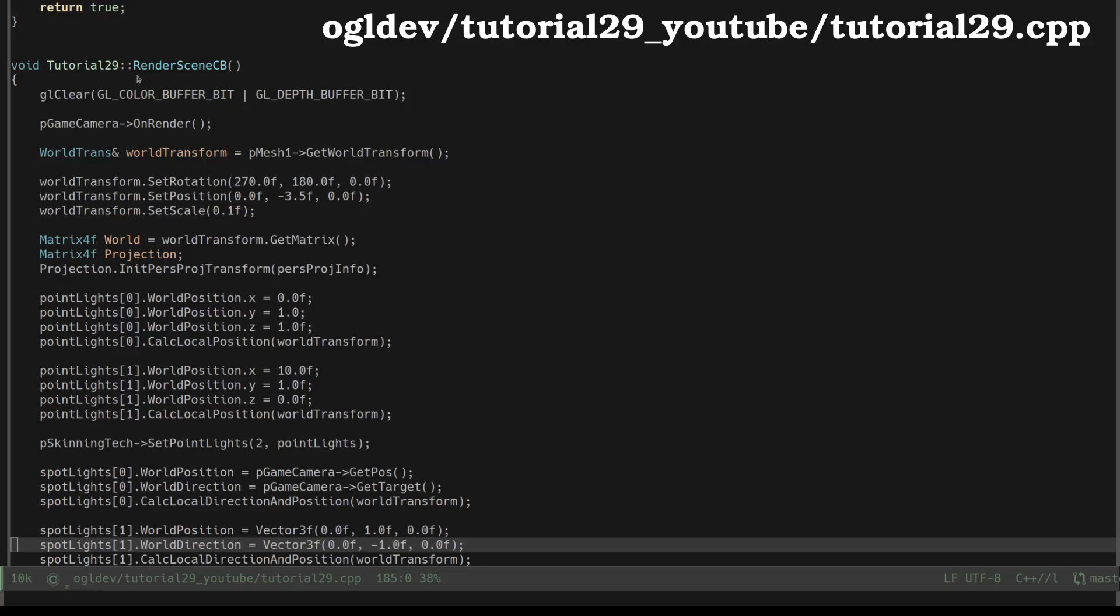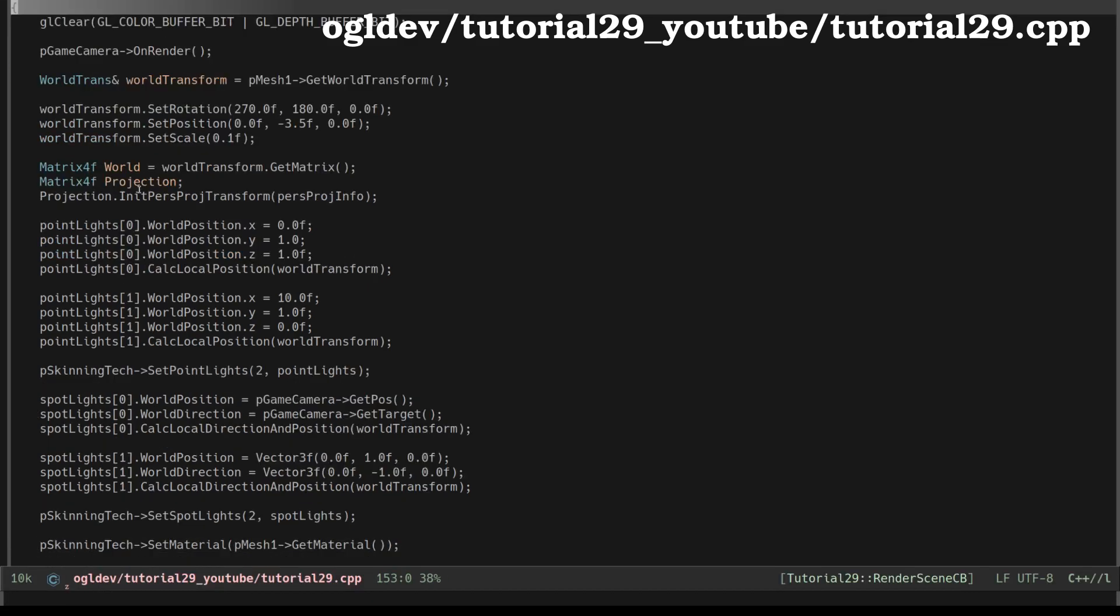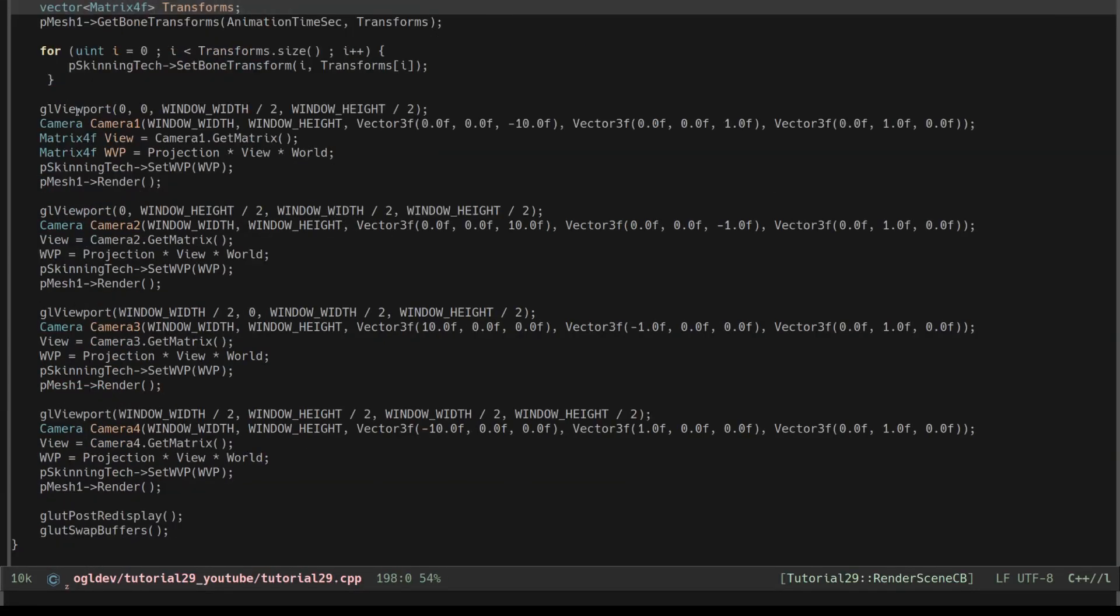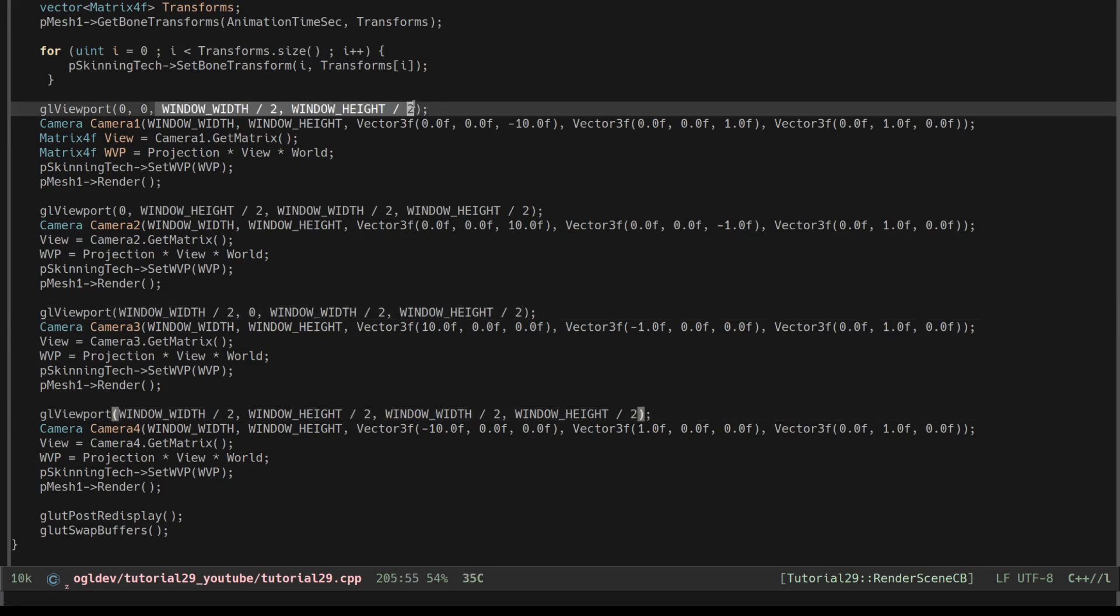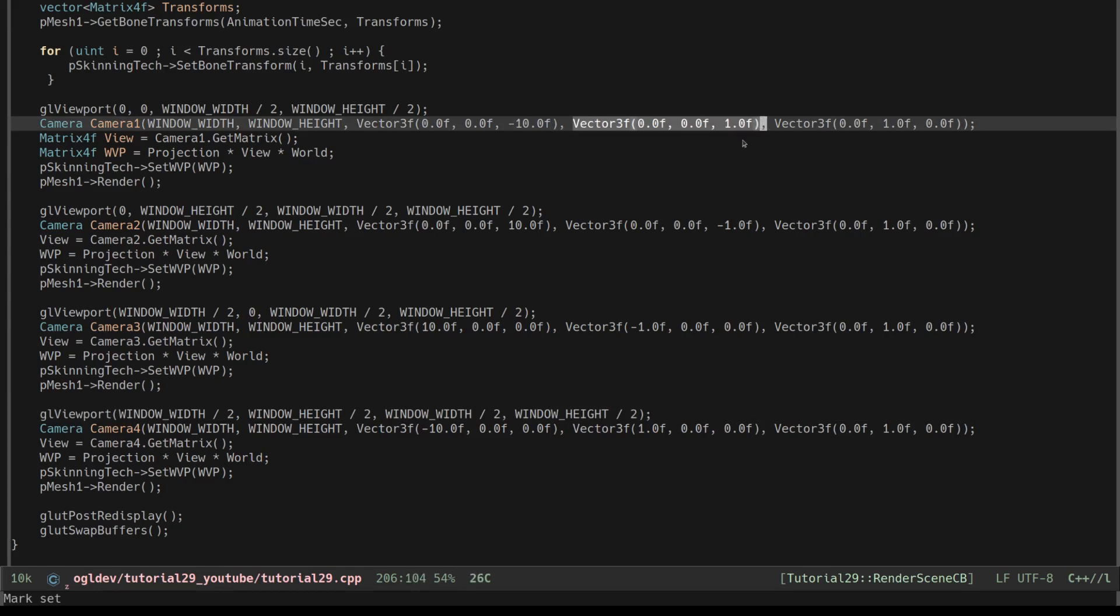I've taken the code from the skeletal animation tutorial, and in the render loop I've added four calls to glViewport. You can see that the width and height of the rectangle in all four calls is half of the original value, so basically we are rendering into one quarter of the window. The x and y coordinates are set to the bottom left corner of the four quadrants of the window. For each quadrant we have a different camera with a different target vector.